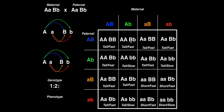For big A, little a, big B, little b — this whole diagonal has that genotype, so there are actually four of those. Then big A, big A, little b, little b — there's only one of those. And big A, little a, little b, little b — there's one more in cell 14, so two of those.